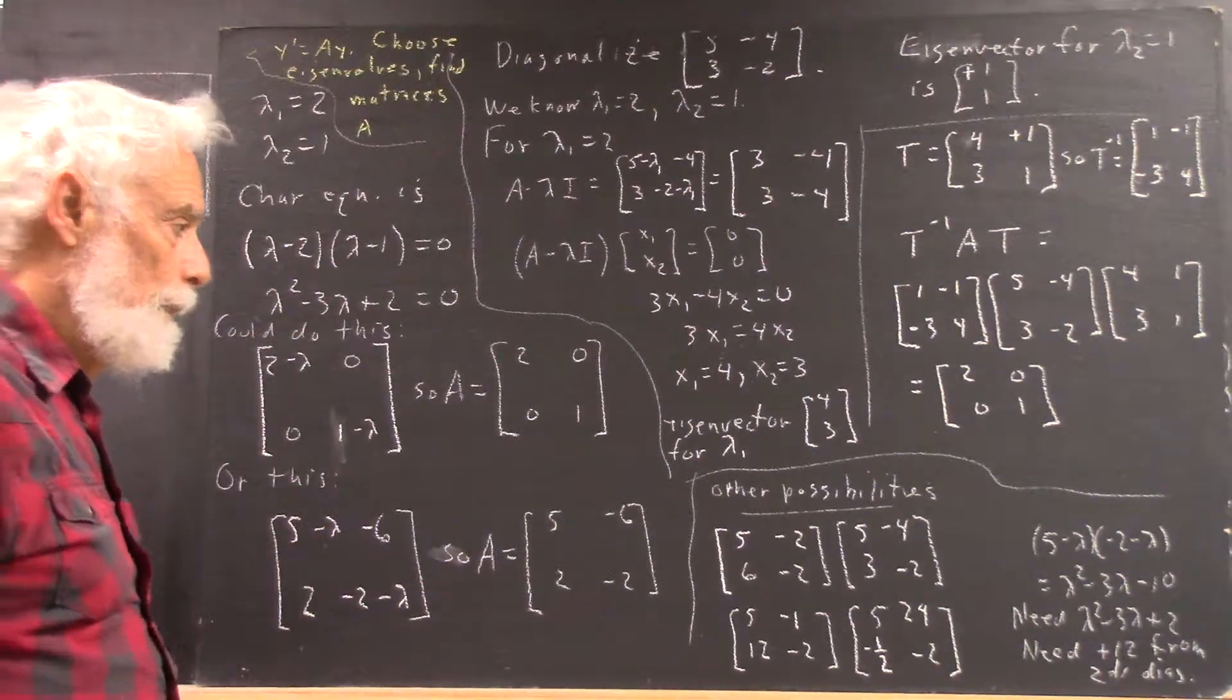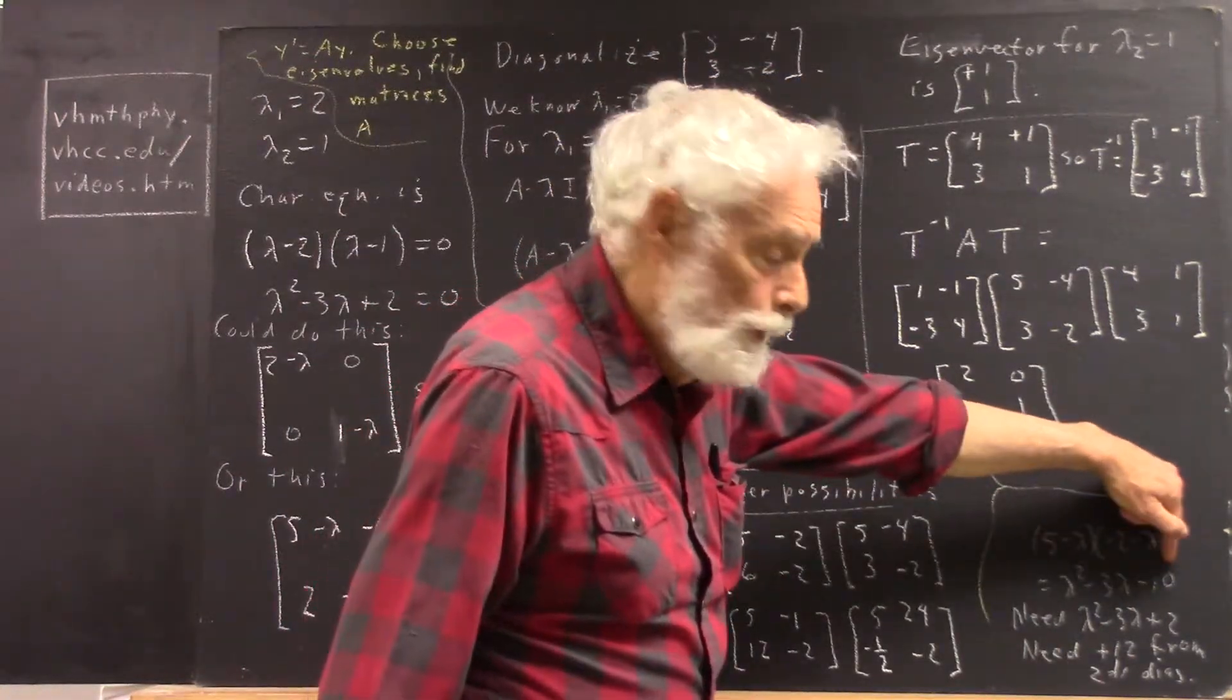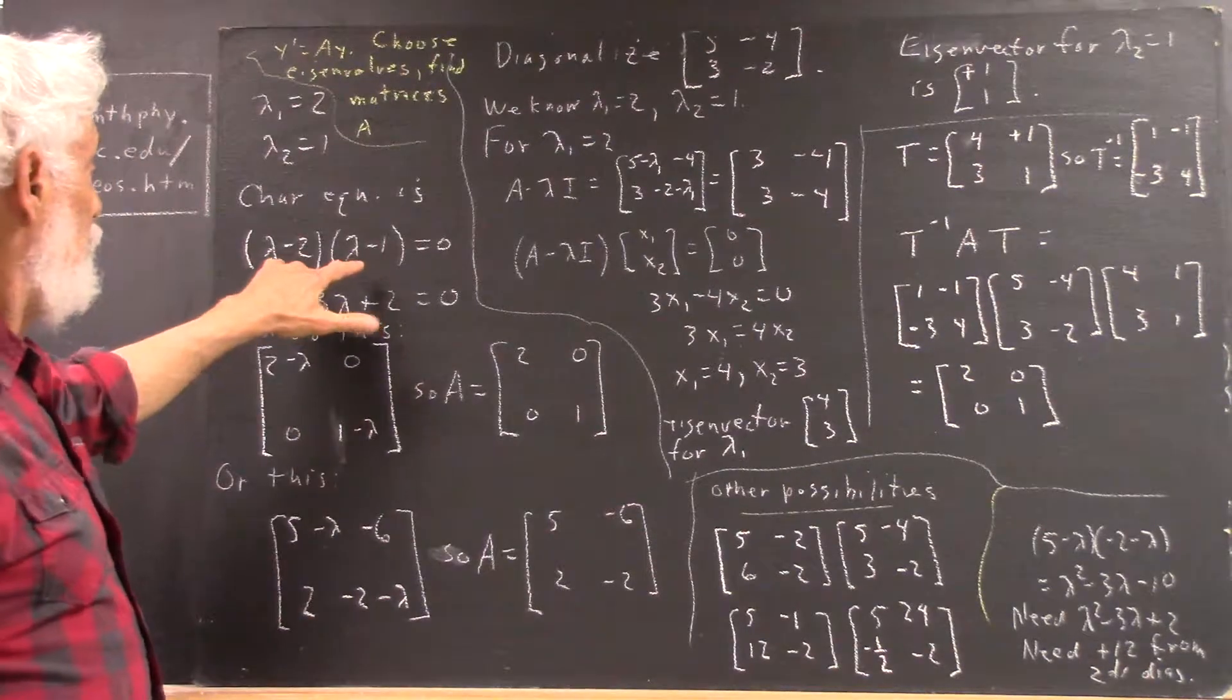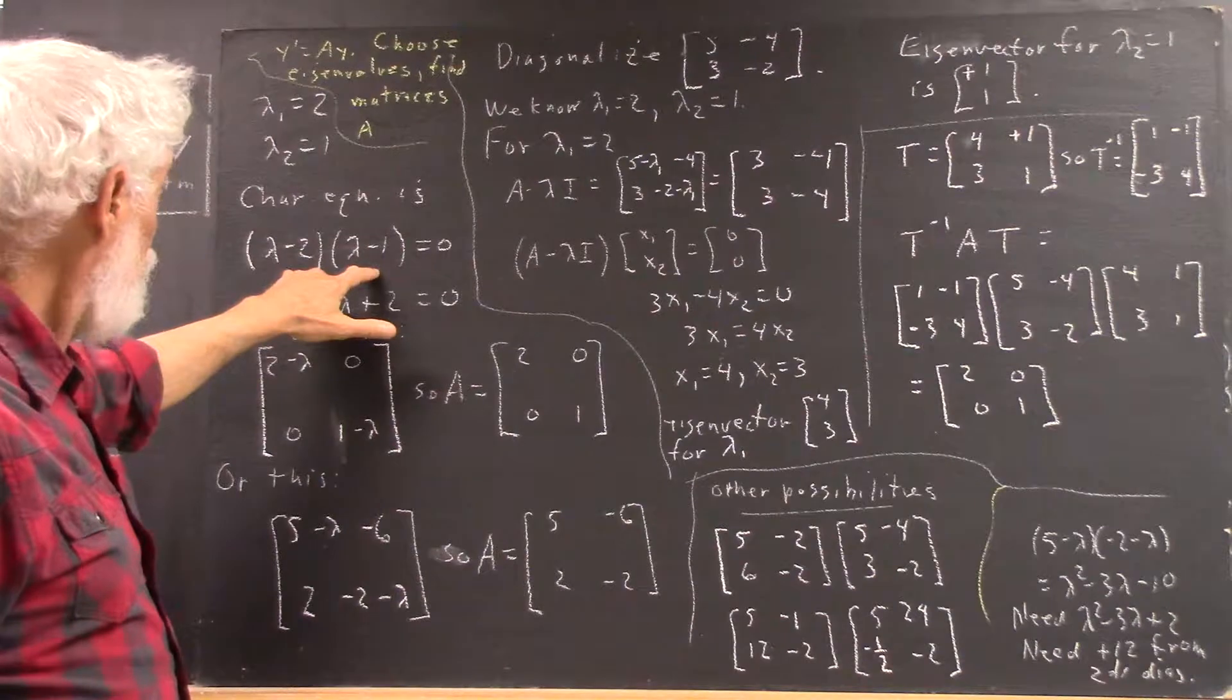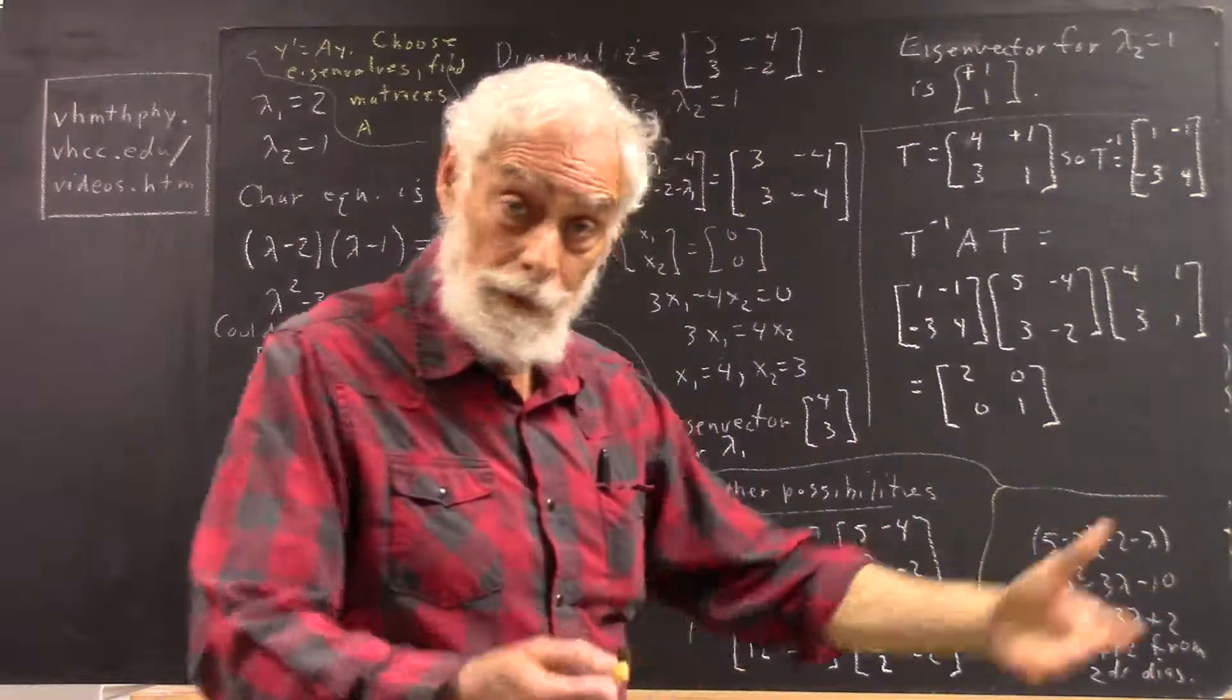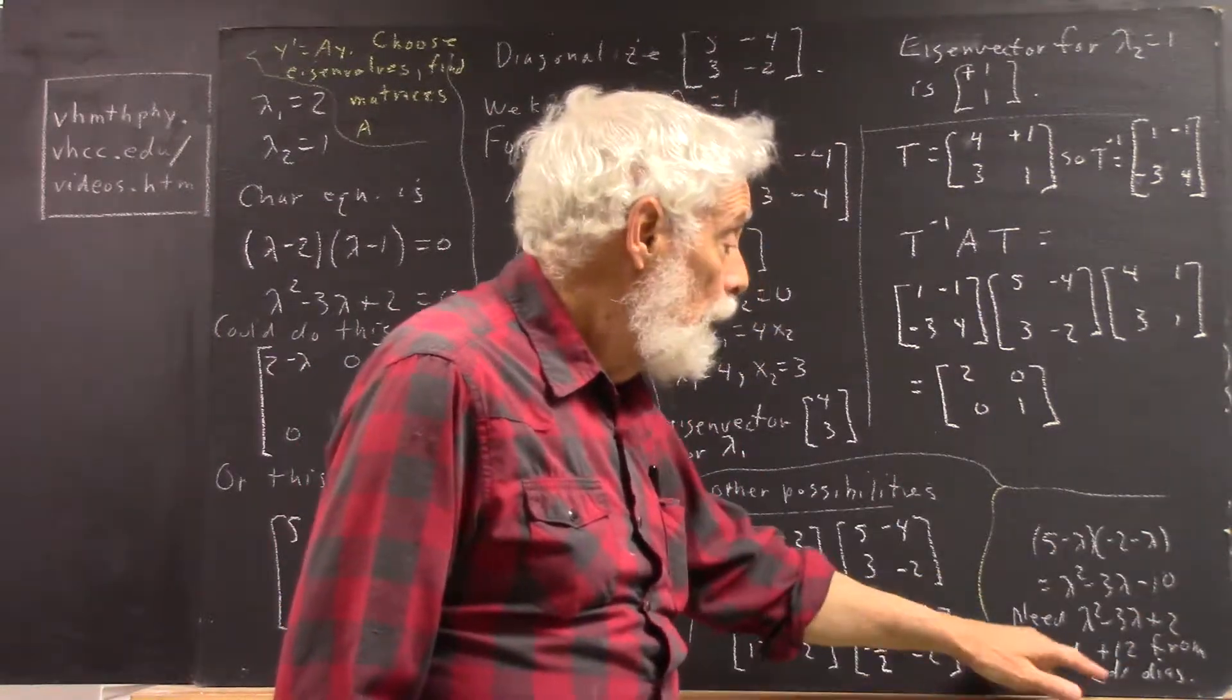If you do this, well, you can multiply this out. We multiplied it out over here just to the side. And we got lambda squared minus 3 lambda minus 10. Well, that's not the characteristic equation we want. We want this characteristic equation that factors into this so we get these eigenvalues. We need, then, to get lambda squared minus 3 lambda plus 2 to get our characteristic equation.